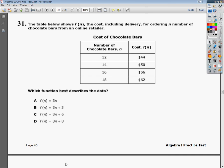Alright, this is the Algebra 1 practice EOC number 2, and this is question 31. It says the table below shows f of n, the cost including delivery for ordering n number of chocolate bars from an online retailer. And then it gives us this pretty graphic here. It wants us to figure out which function best describes the data.